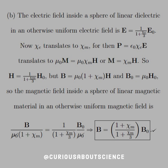A pretty quick parallel. We know that B equals μ₀(1 + χₘ)H. So, once we sift that through, where B₀ equals μ₀H₀, we can simplify. The magnetic field inside a sphere of linear magnetic material in an otherwise uniform magnetic field: B over μ₀(1 + χₘ) equals 1 over (1 + χₘ/3) times B₀ over μ₀. The μ₀'s cancel, and we get the ratio we expected and found before.